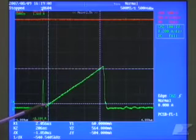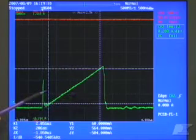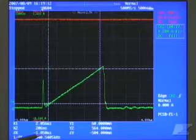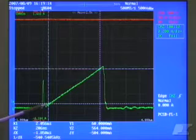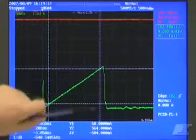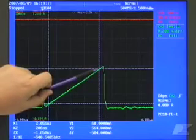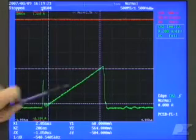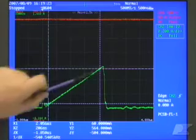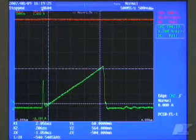So what this is telling me is in this time period, which is 1.85 microseconds, the current ramped from 60 milliamps to 564 milliamps, meaning the difference in the current between these two time points was 504 milliamps.